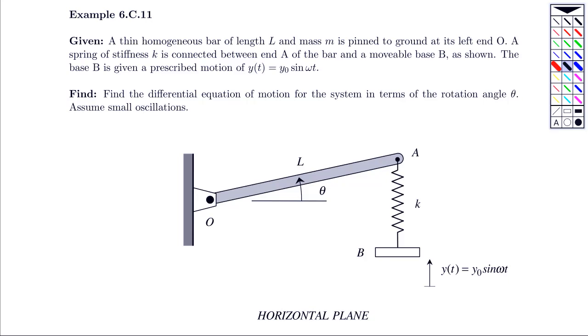For this problem, we have a rigid homogeneous bar of length L. It's pinned to ground at O on the left side. There's a spring that's connected to end A, with the other end of the spring connected to this base B. Base B is given a prescribed motion of y naught sine omega t.